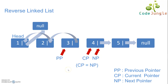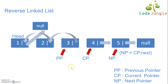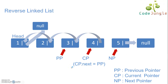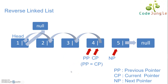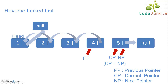Coming to the fourth iteration, current pointer is not equal to null. The next pointer will point to the current pointer's next node, and current pointer's next will point to the previous pointer. Previous pointer will be the current pointer and current pointer will be the next pointer. As a conclusion to this iteration, the fourth node is pointing to its previous node which is node 3, and the fourth node is no more pointing to its next node, node 5.